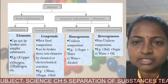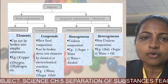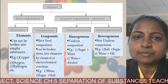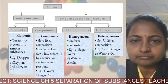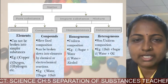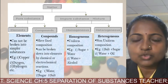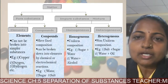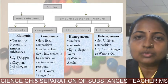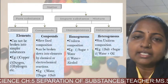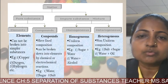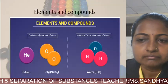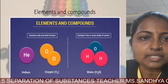In a homogeneous mixture, uniform composition is present throughout — for example, a solution of sugar and water, or a solution of water and alcohol. In a heterogeneous mixture, non-uniform composition is present — examples are salt and sugar, or water and oil.